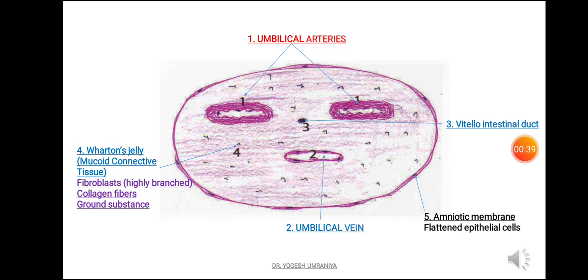In this figure you can see that number 1 indicates the umbilical arteries. They are two in number, with thick walls and a smaller lumen. You can also see the internal elastic lamina within the structure of the umbilical arteries. Number 2 is the umbilical vein, which is single in number and has a very thin wall, with a lumen quite wider as compared to the umbilical arteries.